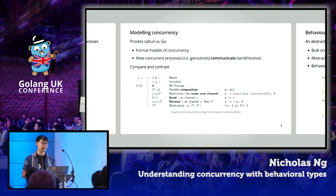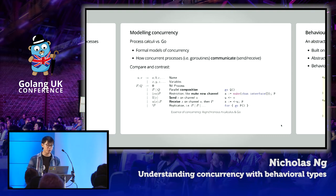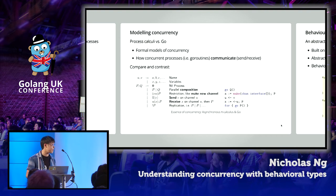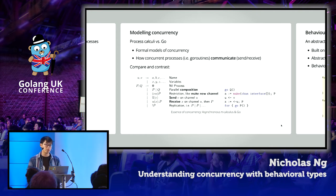Process calculi are formal mathematical models of how concurrent processes communicate with each other — in Go terms, that's goroutines communicating via send and receive. One instance is the synchronous pi calculus. Despite its complete syntax being really simple, it has all the components that make up Go's concurrency features: parallel composition equivalent to spawning a goroutine, channel creation, send, receive, and loops to keep doing communication.